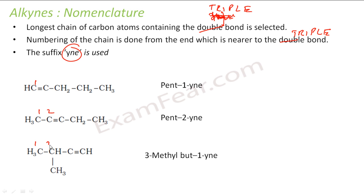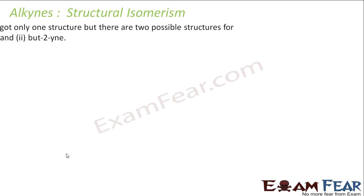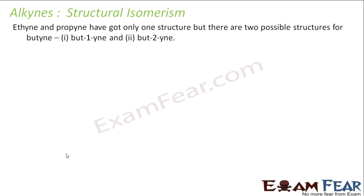For a branched example, numbering from the appropriate end gives the triple bond at position 1, with a methyl group at position 3, making it 3-methylbut-1-yne. Ethyne and propyne have only one possible structure, while butyne has two: but-1-yne and but-2-yne — so there is structural isomerism in alkynes.